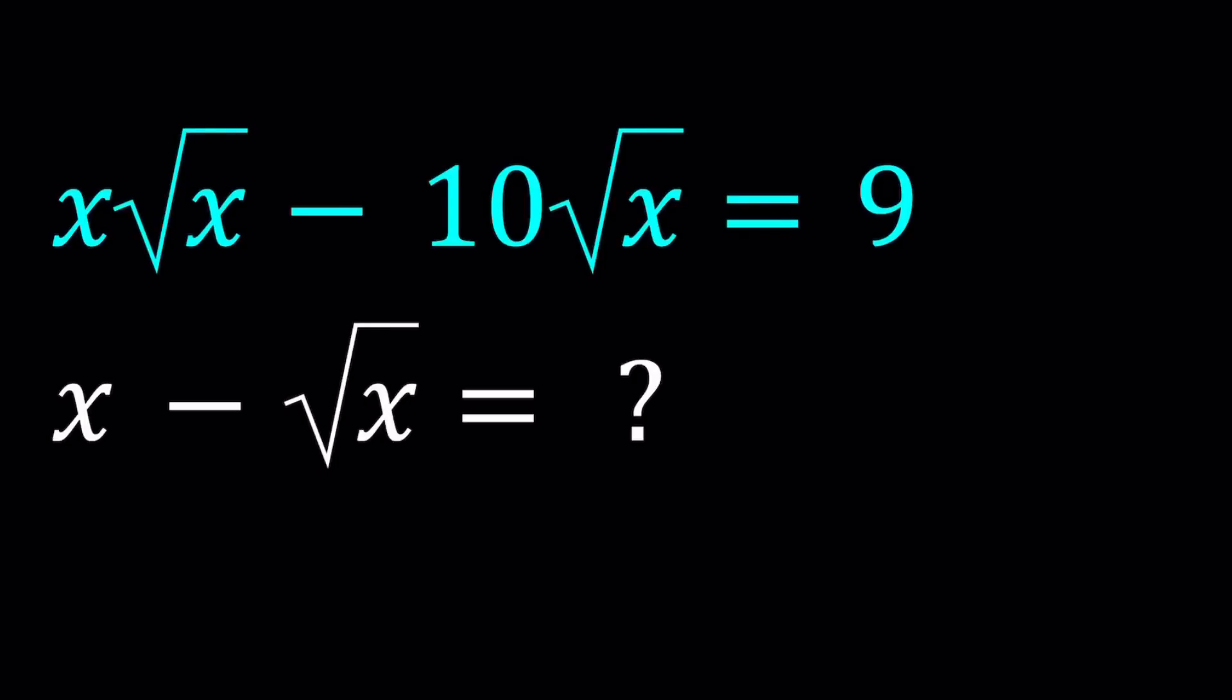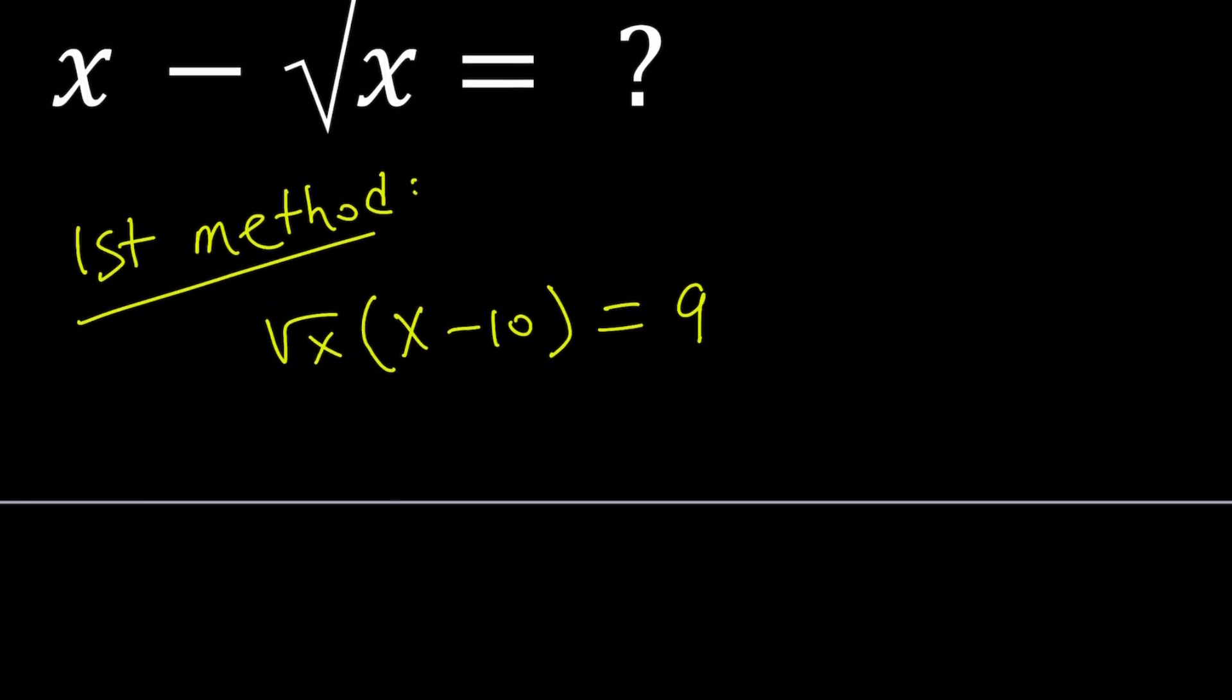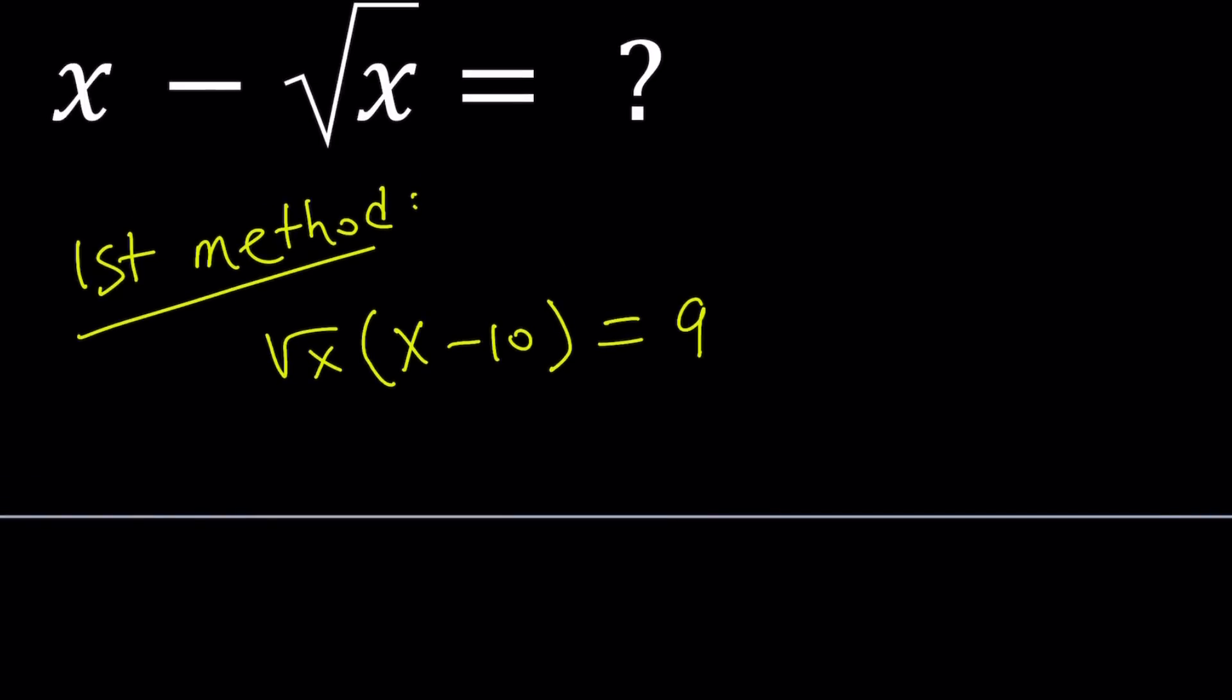Hello everyone. In this video, we're going to be evaluating a radical expression. We have x times the square root of x minus 10 times the square root of x equals 9. We're going to evaluate x minus the square root of x. I'll be presenting two methods. Let's start with the first one. For my first method, I'm going to try to solve for x. I could probably factor the square root of x out and write this as square root of x times x minus 10 equals 9. The next step could be squaring both sides.